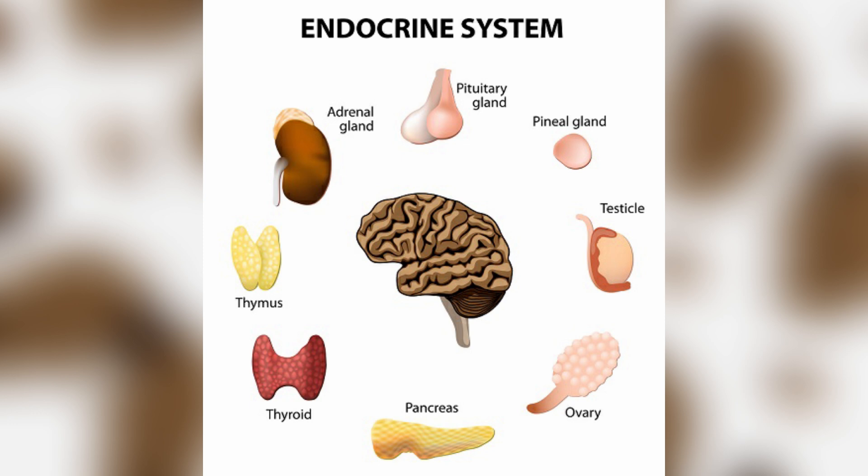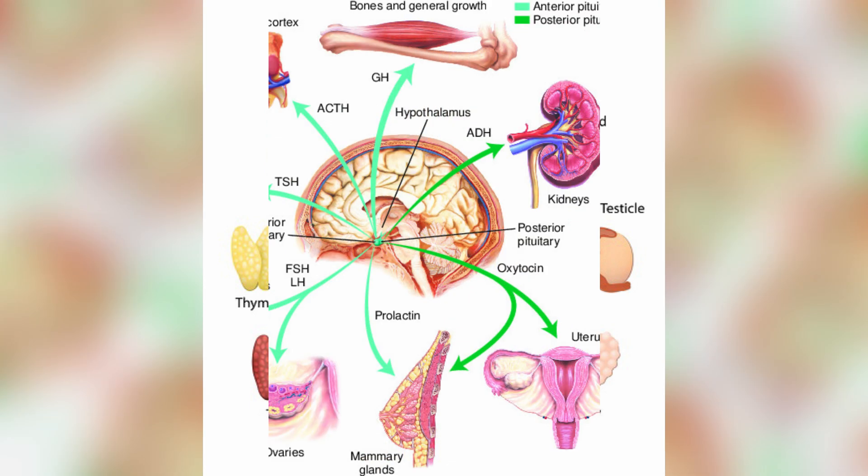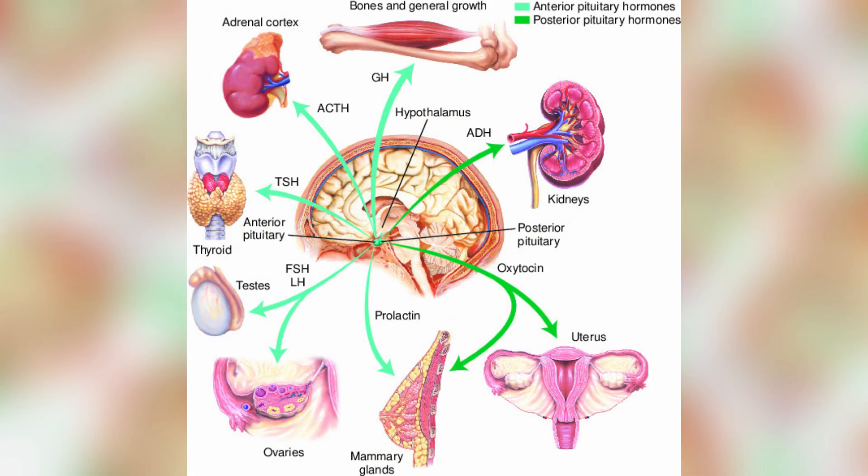These glands produce and secrete hormones into the bloodstream, traveling and affecting various target tissues in the body. Endocrine glands produce hormones and regulate the body's functions and development, metabolism, reproduction, growth, and sleep.